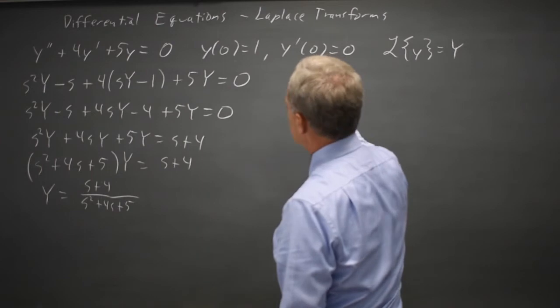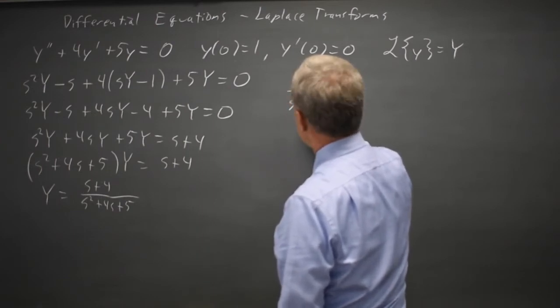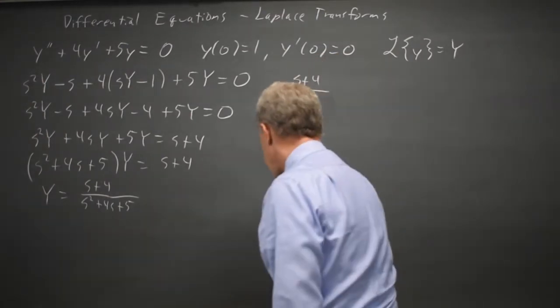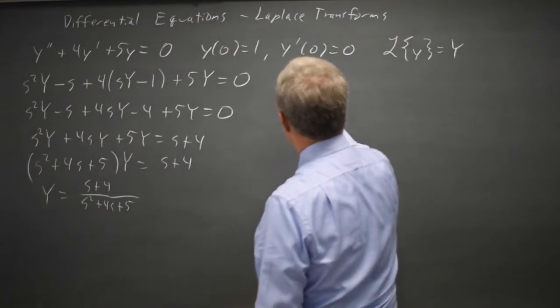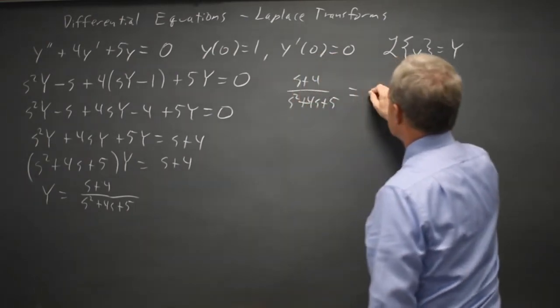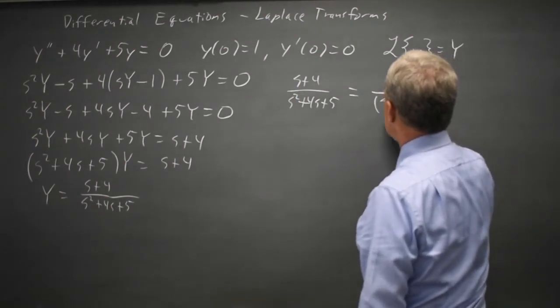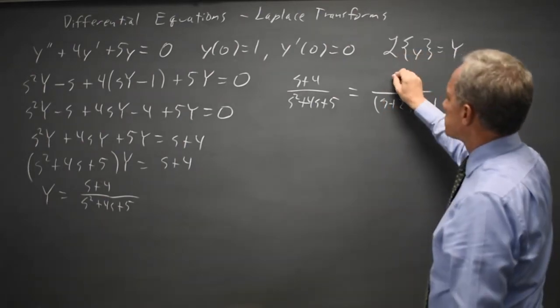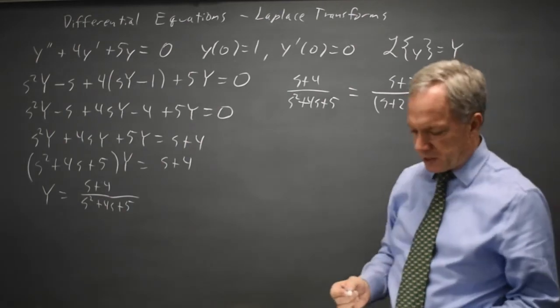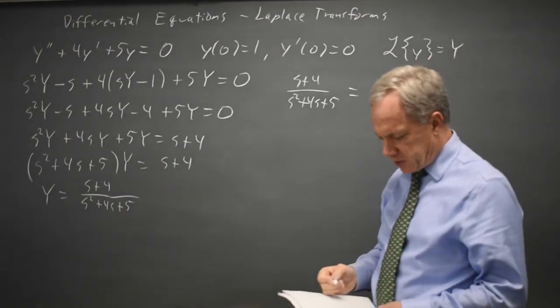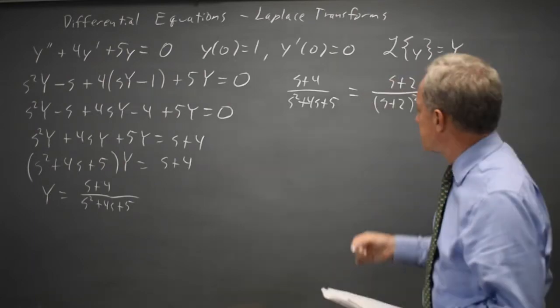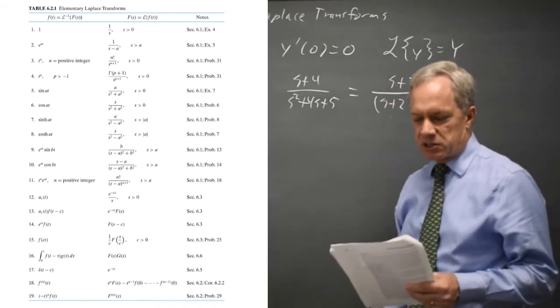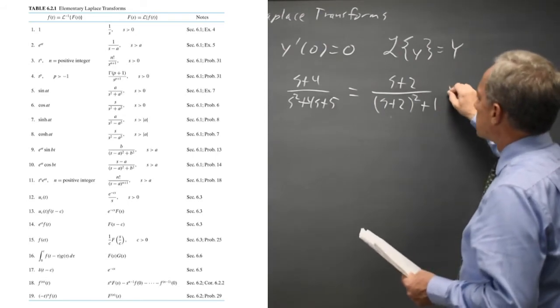s plus four over s squared plus four s plus five equals s plus four over s plus two squared plus one in my denominator. I want my numerator to be s plus two because the form in my table that matches with an s minus a squared plus b squared in the denominator, I need an s minus a. In this case a equals negative two.